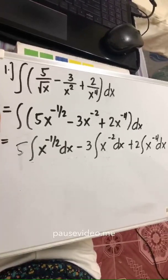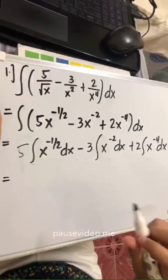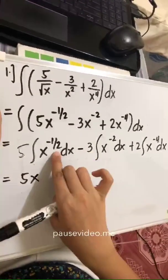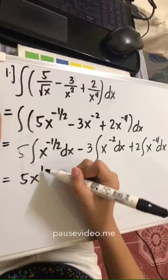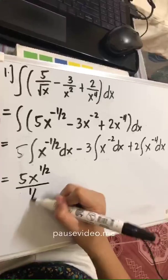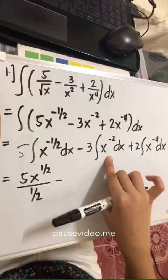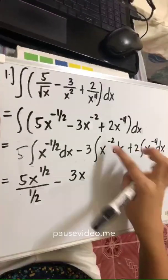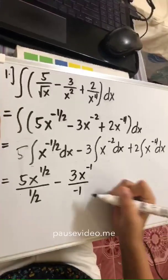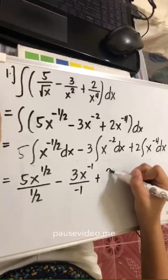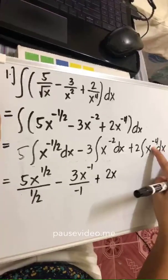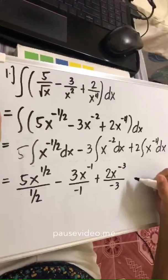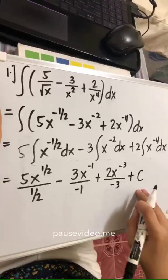We'll proceed now with the integral process using the simple power formula. We have 5 times x to the power of negative 1/2 plus 1, which is positive 1/2, all over 1/2, minus 3 times x to the negative 2 plus 1, which is negative 1, all over negative 1, plus 2 times x to the negative 4 plus 1, which is negative 3, all over negative 3, plus C. Do not forget the plus C.